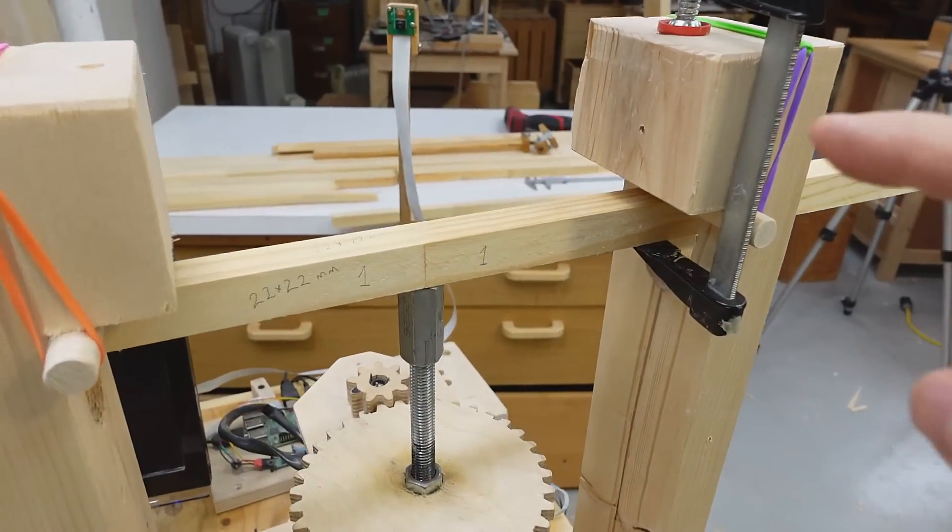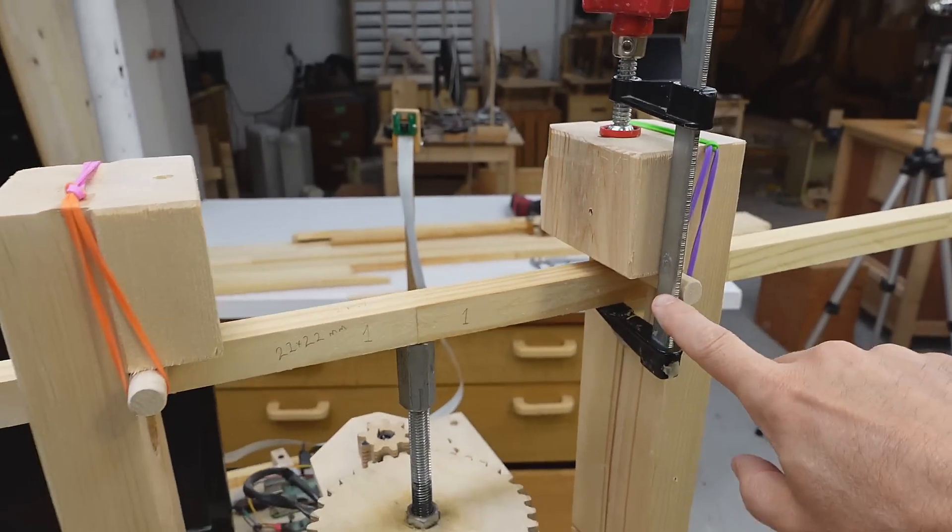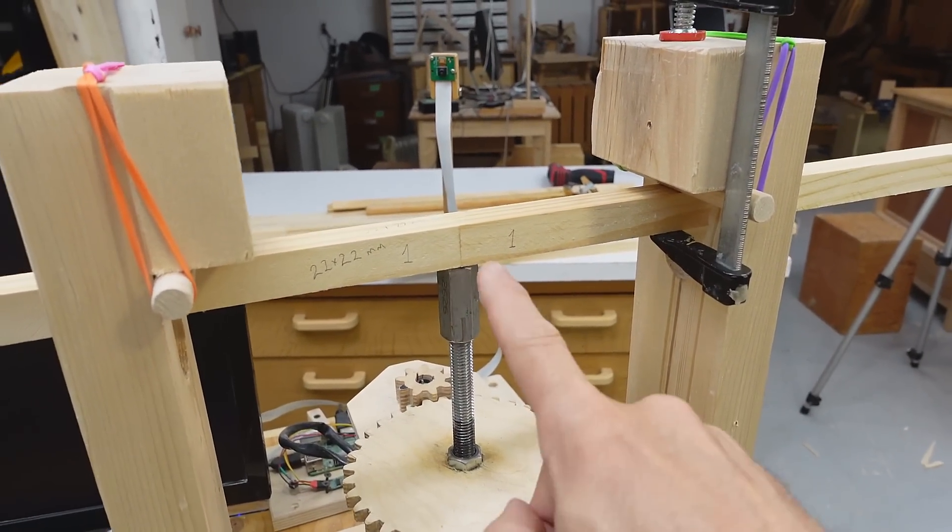I got a 22 by 22 millimeter specimen in here with the joint right here and just this little clamp to hold it up so that when the scale tears it doesn't weigh the specimen.